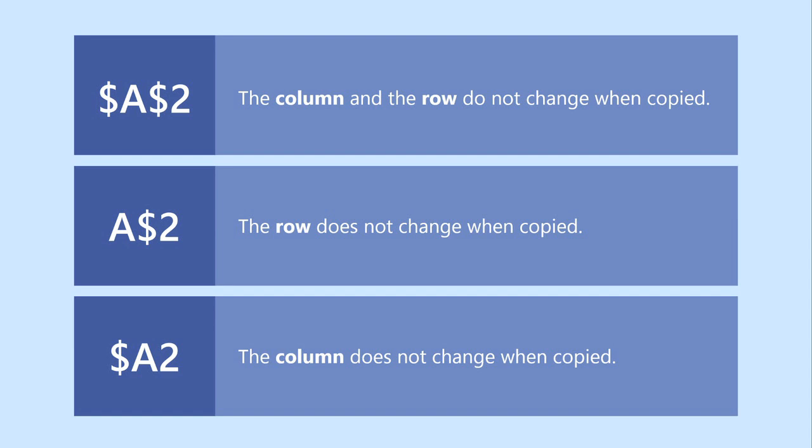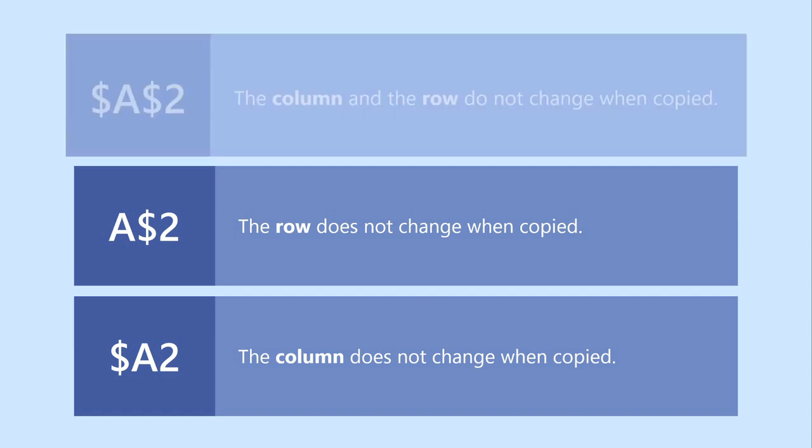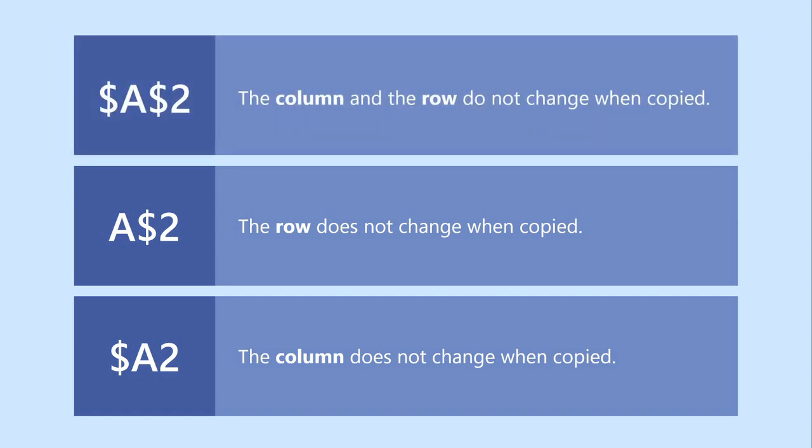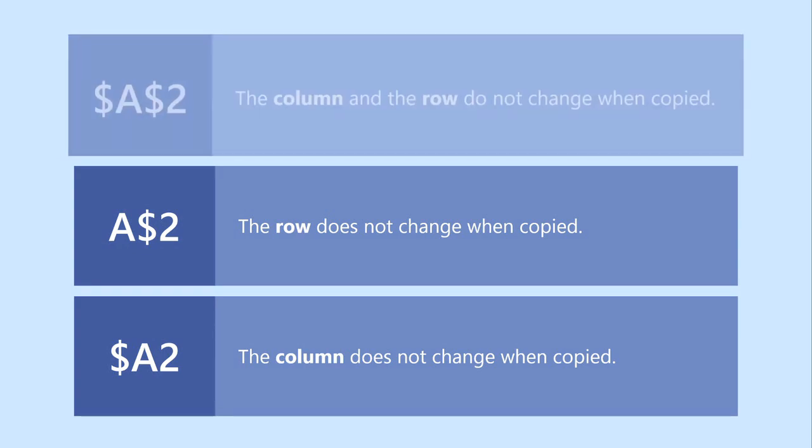Absolute references have a dollar sign placed before the column, row, or both, to keep them from changing when you copy the formula to another cell. To keep the column and the row from changing, place a dollar sign in front of both. To keep only the row from changing, place a dollar sign in front of the row only. To keep only the column from changing, place a dollar sign in front of the column. Most of the time, you'll be using the first type — the one where there's a dollar sign before both the column and the row.